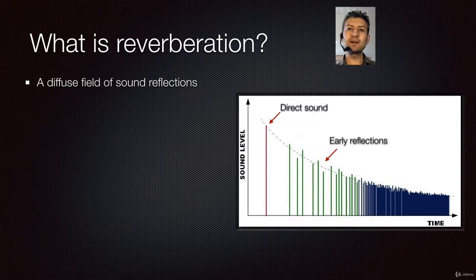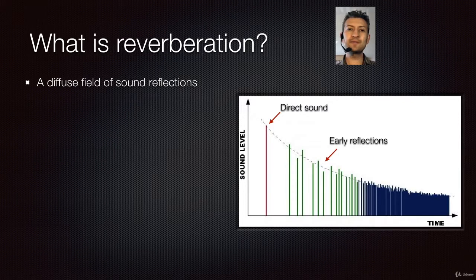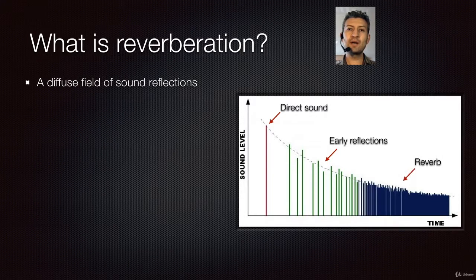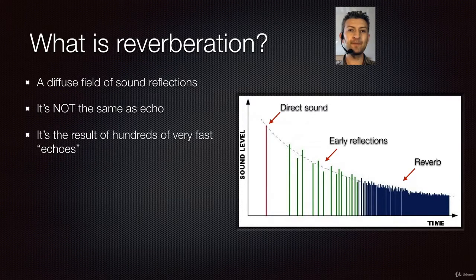Depending on the kind of material on the walls of the room, the sound may continue bouncing hundreds of times in all directions. This creates a dense group of reflections that is known as reverberation. As we can see, reverb is not the same as echo. Although they are very related, we could say that reverb is a group of hundreds of fast echoes.